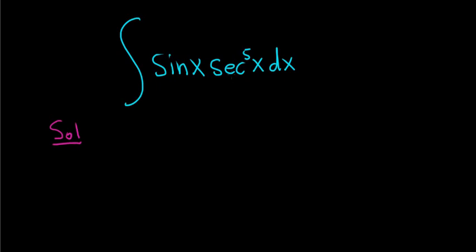So because we have a secant here and a sine, the secant function is kind of problematic. Let's go ahead and rewrite secant in terms of cosine. So secant x is equal to 1 over cosine x.